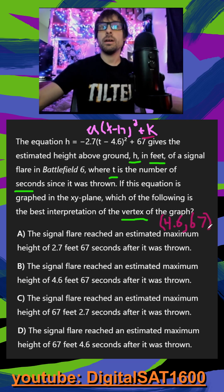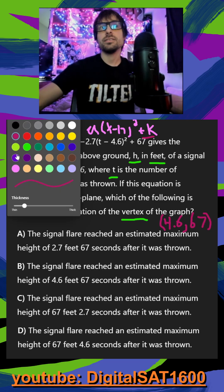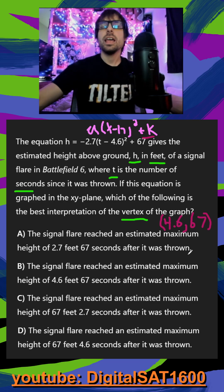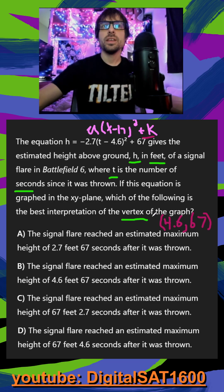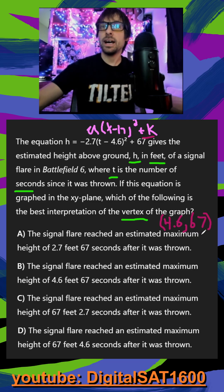So my vertex is at 4.6, 67 — and we want to attach units to that too. So when t equals 4.6 seconds, I reach my maximum height in feet of 67.